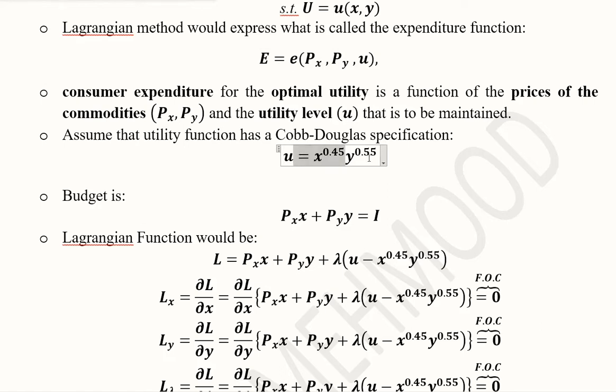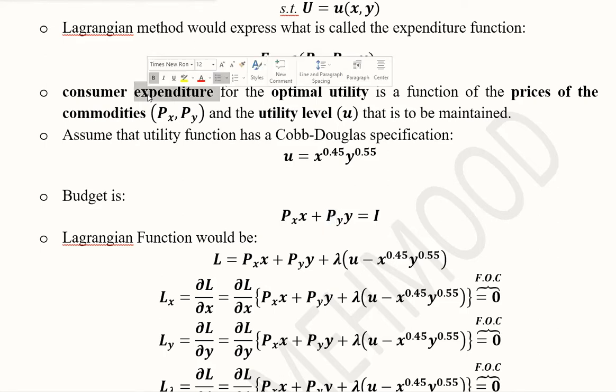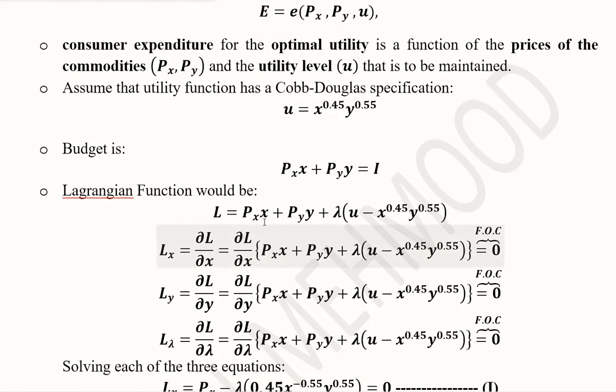Now we do this process where we have the utility function which is the Cobb-Douglas specification of a utility function. The budget line is this. In this case, as we know that we have to minimize the expenditure cost, we keep it here as the objective function and we invert the utility function. As you can see, the term on the right-hand side has been lifted to the left-hand side and becomes a negative value.